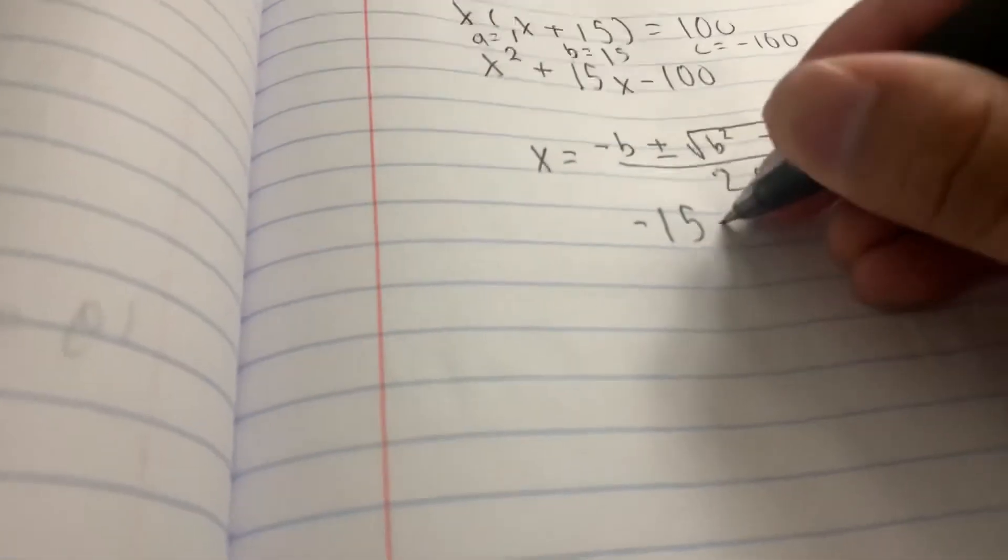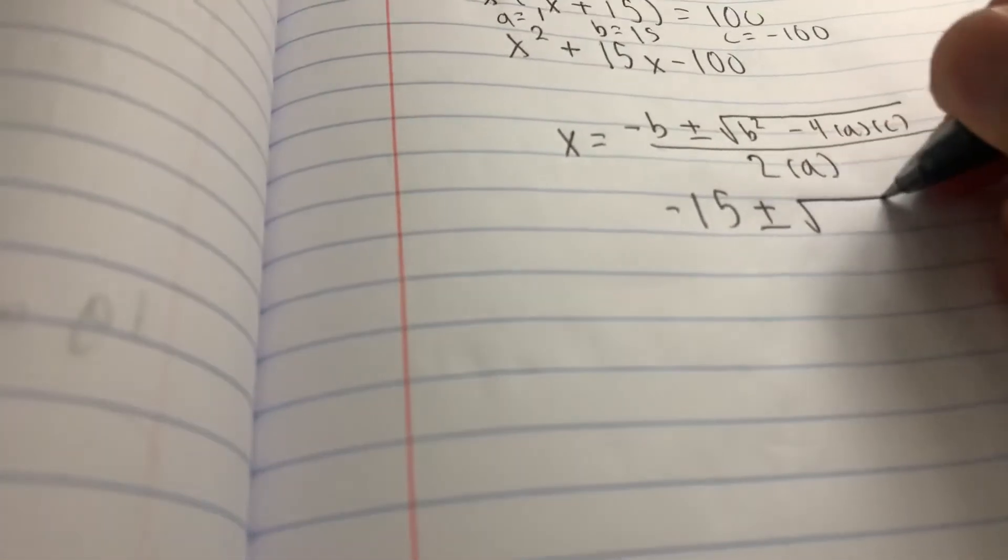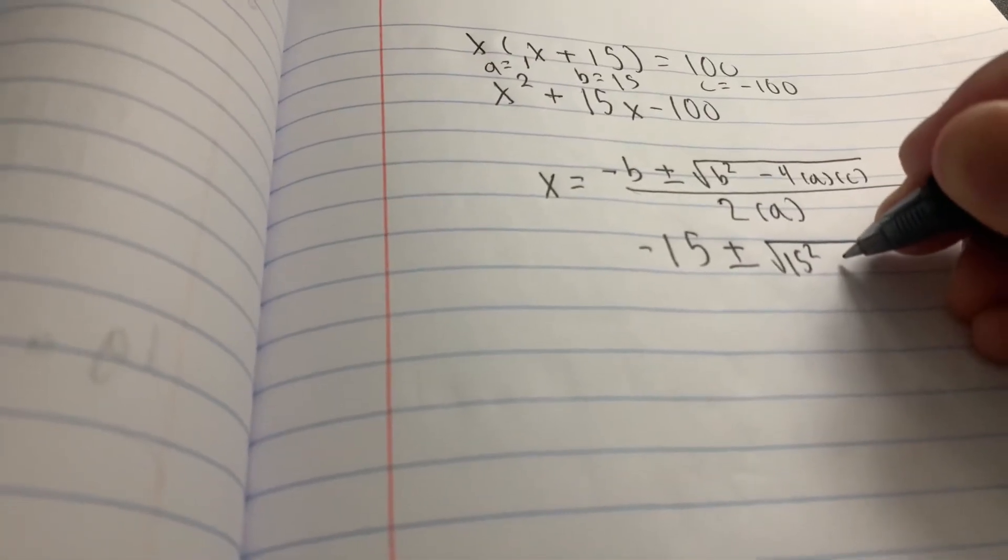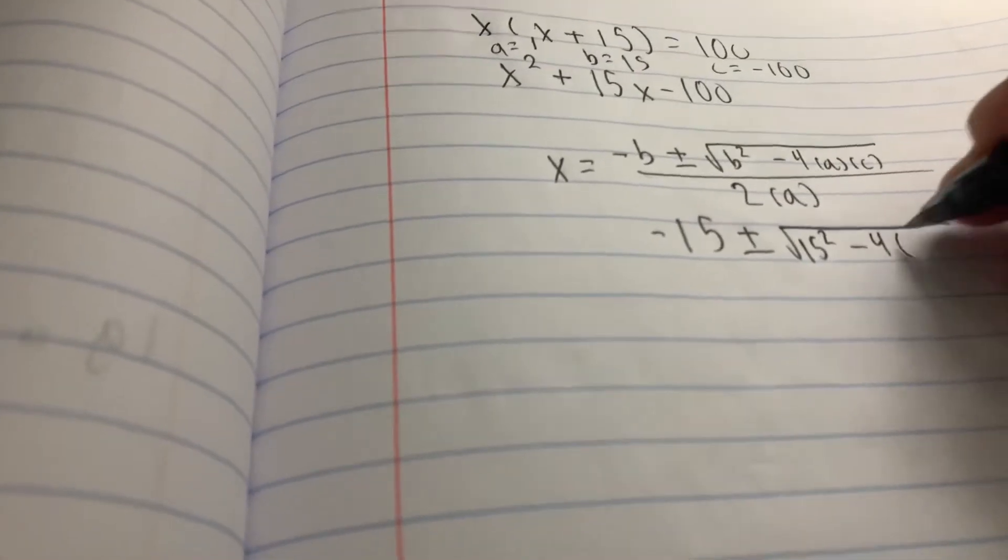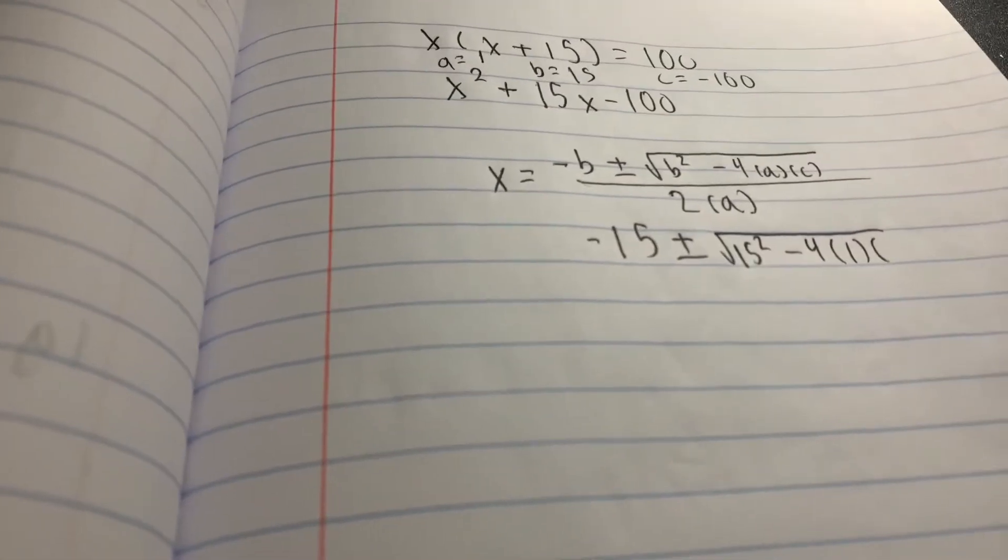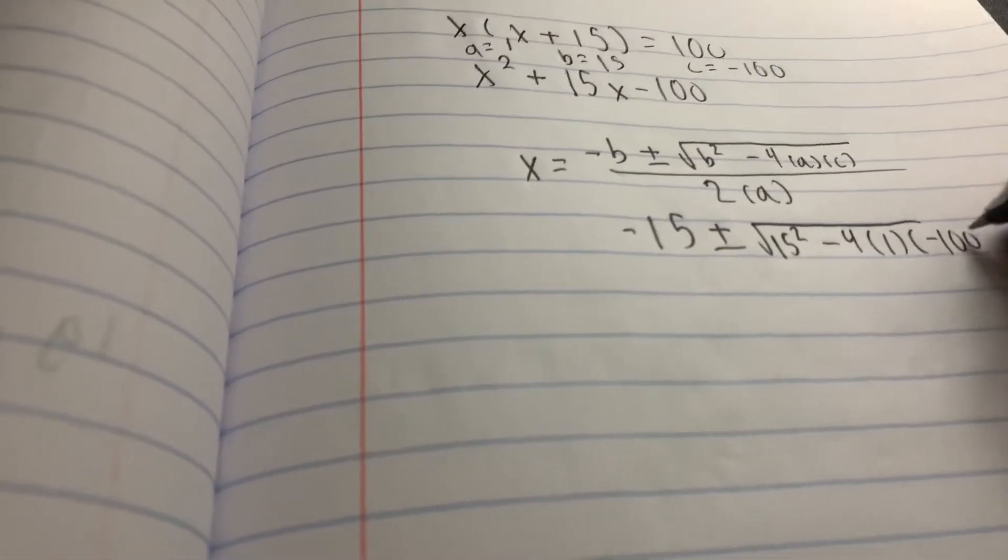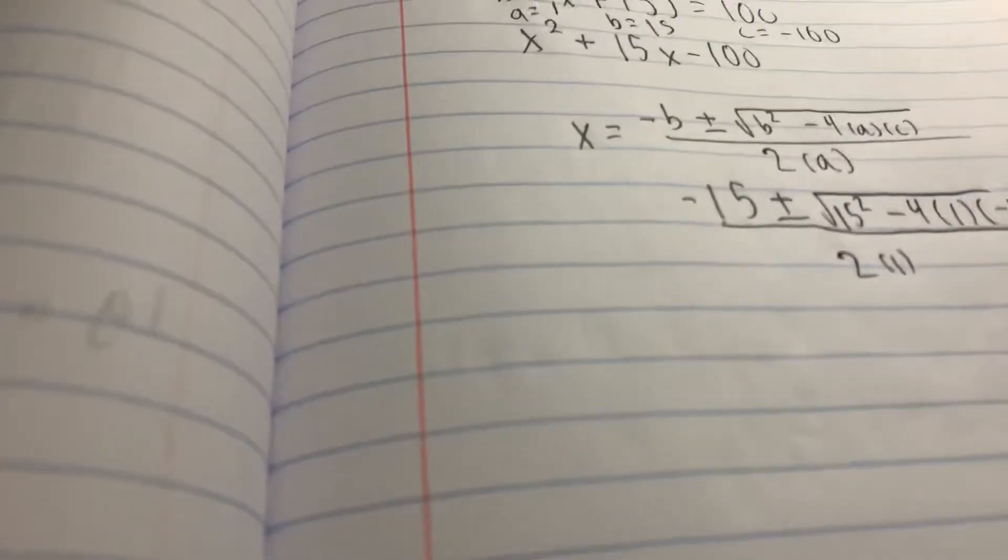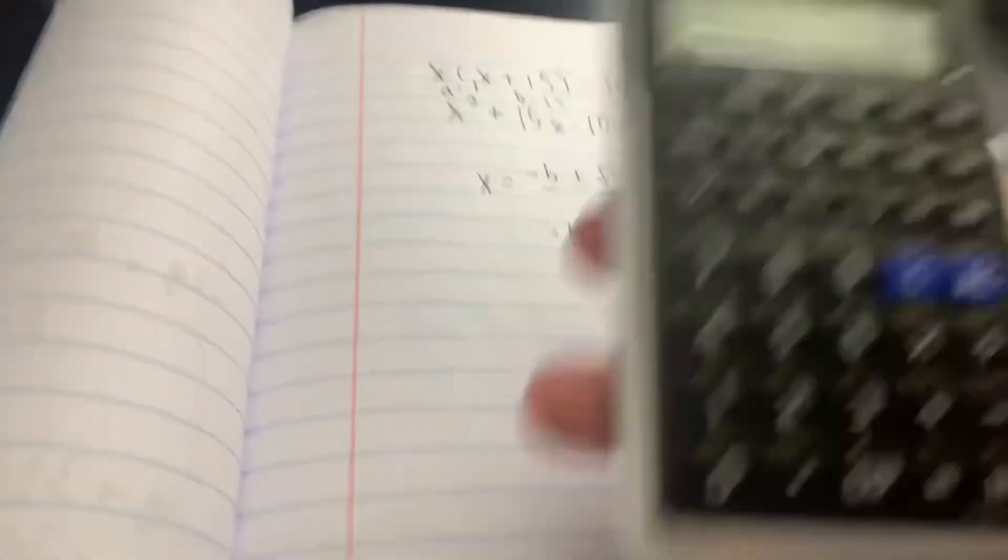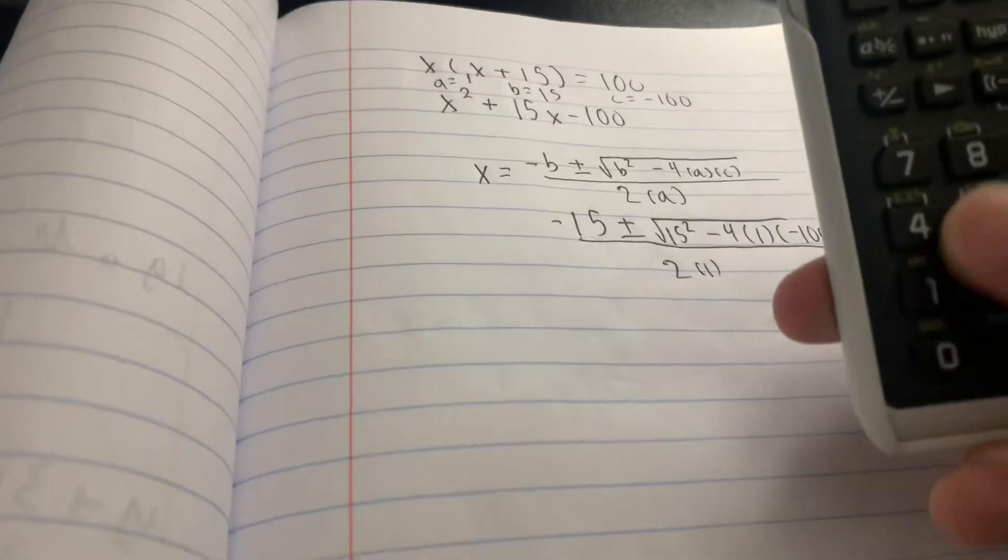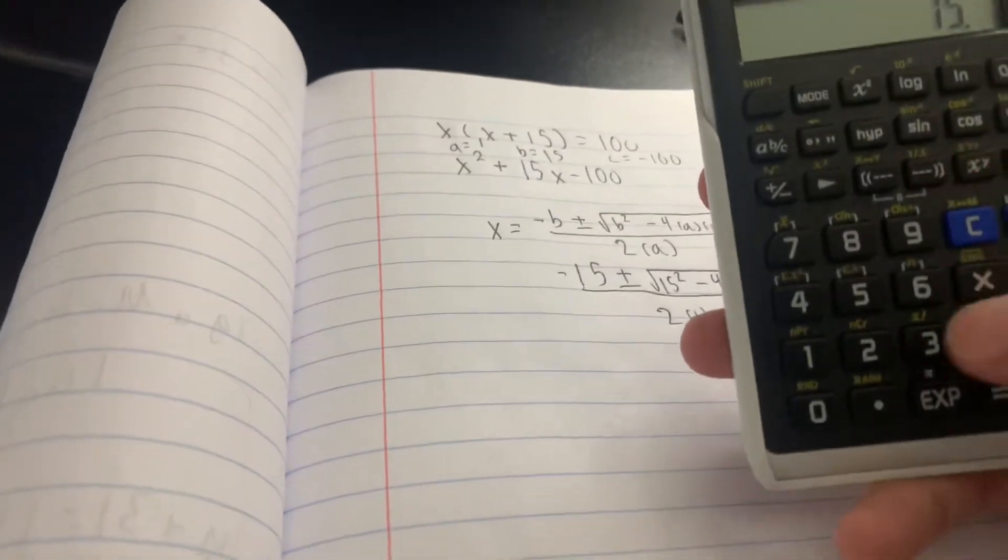Negative 15 plus or minus 15 squared minus 4 times 1 times negative 100, all of that divided by 2 times 1, which is just 2. Put that into this calculator. My calculator's kind of pooped, so I'm going to do it step by step. So 15 to the power of 2 is 225.